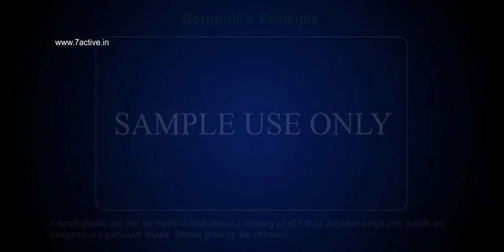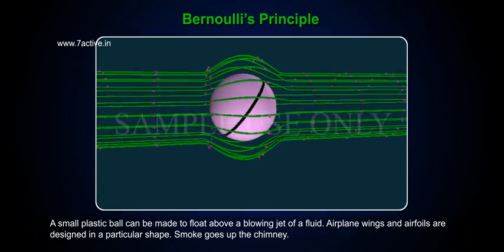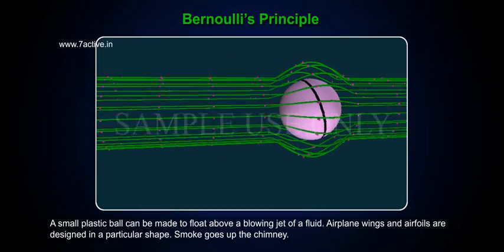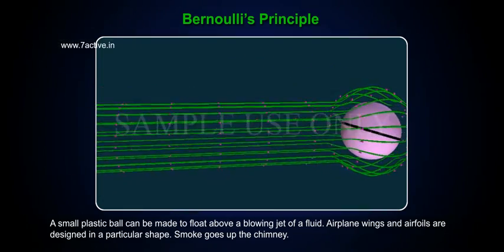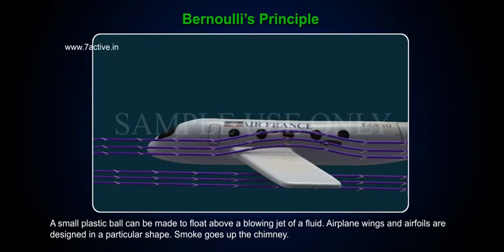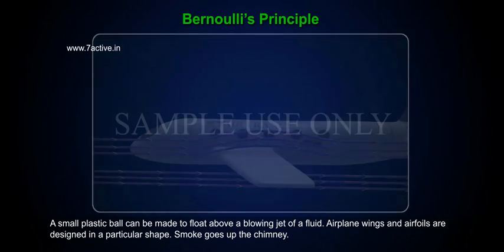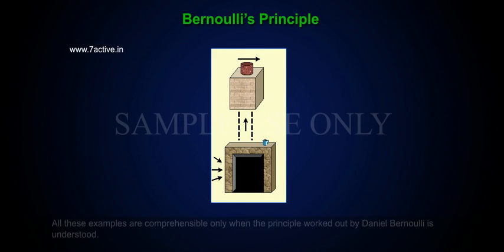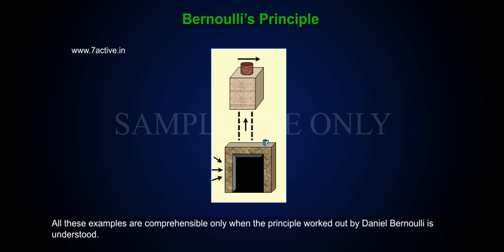Bernoulli's Principle. A small plastic ball can be made to float above a blowing jet of a fluid. Airplane wings and airfoils are designed in a particular shape. Smoke goes up the chimney. All these examples are comprehensible only when the principle worked out by Daniel Bernoulli is understood.